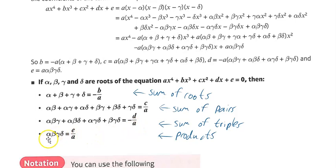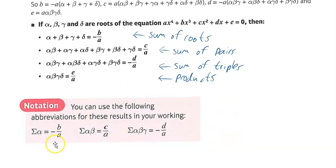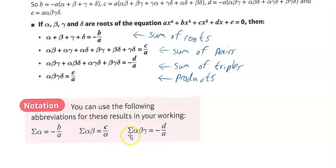And then the product — alpha beta gamma delta — is e over a. Very useful notation: sigma alpha means the sum of all the individual roots equals minus b over a; sigma alpha beta, the sum of the pairs, equals c over a; and the sum of the triples equals minus d over a. It saves you a bit of time writing it out.